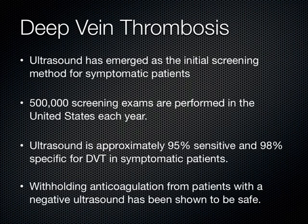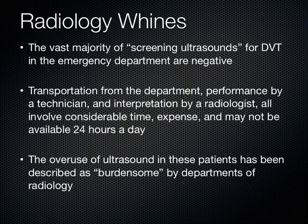Ultrasound really is the initial screening modality in symptomatic patients. The same test characteristics don't necessarily hold up in asymptomatic patients, like those in the ICU who are just at risk for DVT. There are about half a million screening exams every year. We know that ultrasound is accurate — 95% sensitive, 98% specific in symptomatic patients — and withholding anticoagulation in those patients has been shown to be safe. Radiology has been writing about the overuse of their department, noting that the majority of these screening ultrasounds are actually negative.